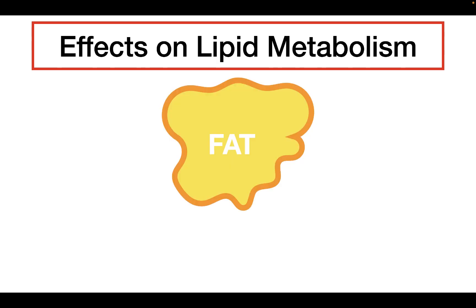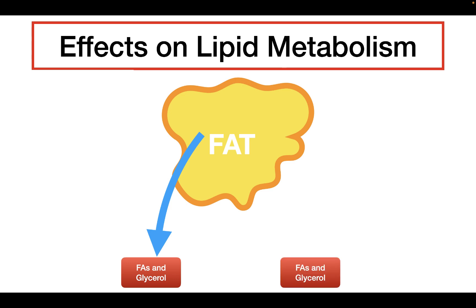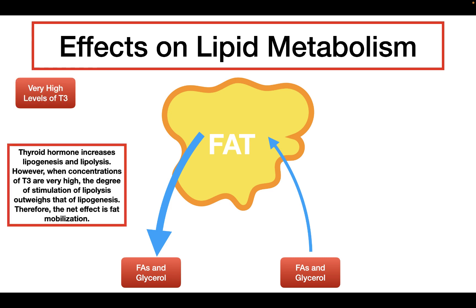Thyroid hormone can also have effects on lipid metabolism. It increases the rate of lipolysis, which converts fat into free fatty acids and glycerol. In addition, thyroid hormone is also going to increase the rate of lipid synthesis, which converts free fatty acids and glycerol into fat. Now, when we have very high levels of thyroid hormone or T3, the thyroid hormone is actually going to stimulate lipolysis far more than it does lipogenesis. As a result, when the level of thyroid hormone is very high, the net effect is going to be the mobilization of fat — or in other words, lipolysis.